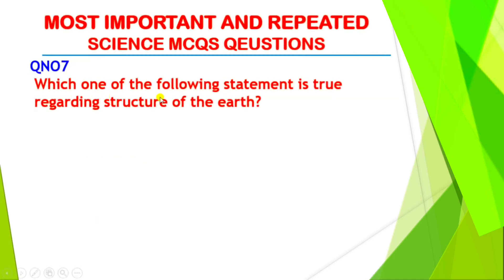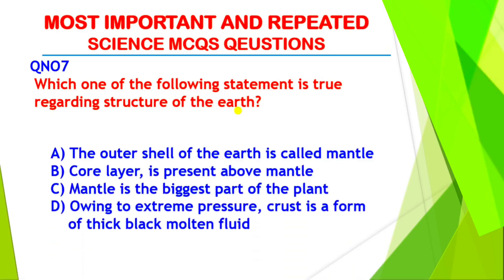Question number seven: which statement is correct about the structure of the earth? The right answer is option C — the mantle is the biggest part of the earth. The inner structure of the earth has three major parts: the crust (the uppermost thin layer of rock on which we live), the mantle (layers of hot, hard and in some places molten rocks — this is the largest part), and the core (the innermost part below the mantle, made of iron and nickel, and very hot).